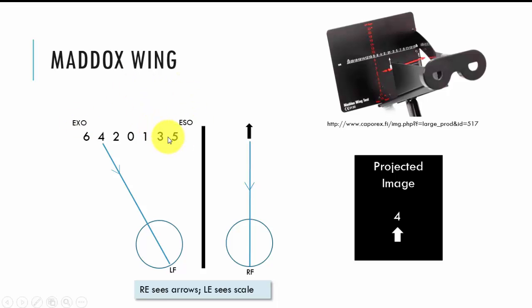However, some patients will tell you it's pointing to the four if it falls between here, the three and the five. And so what you need to clarify with your patient when using the Maddox wing is, is it actually pointing to the four or is it between the three and the five. So make sure you ask that question because it is the difference between documenting that the patient has an exo versus an eso, and that's important in terms of measuring the size of the deviation.